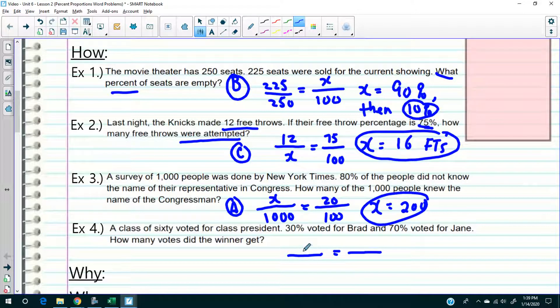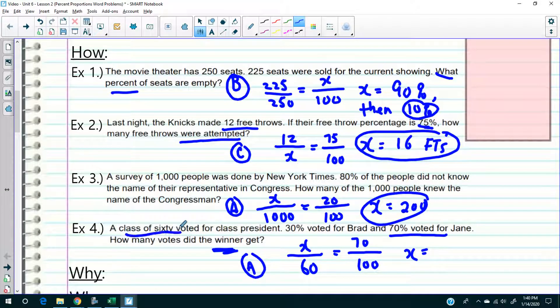Maybe I made these questions - maybe I picked hard questions. Maybe I picked these questions that look more difficult than I should. A class out of 60 people - 30% voted for Brad, 70% voted for Jane. So Jane won because they want to know how many did the winner get. So 70% of the people voted for Jane, that's out of 60 people. So how many out of the 60 is 70%?